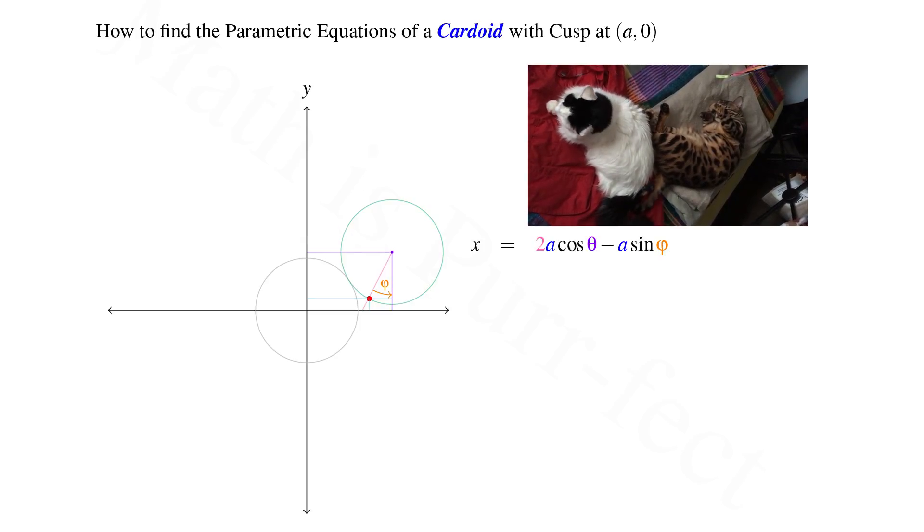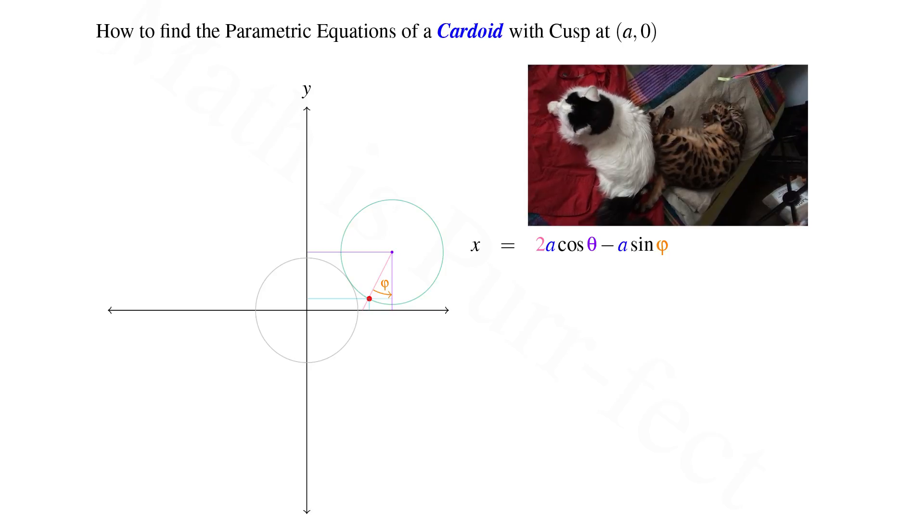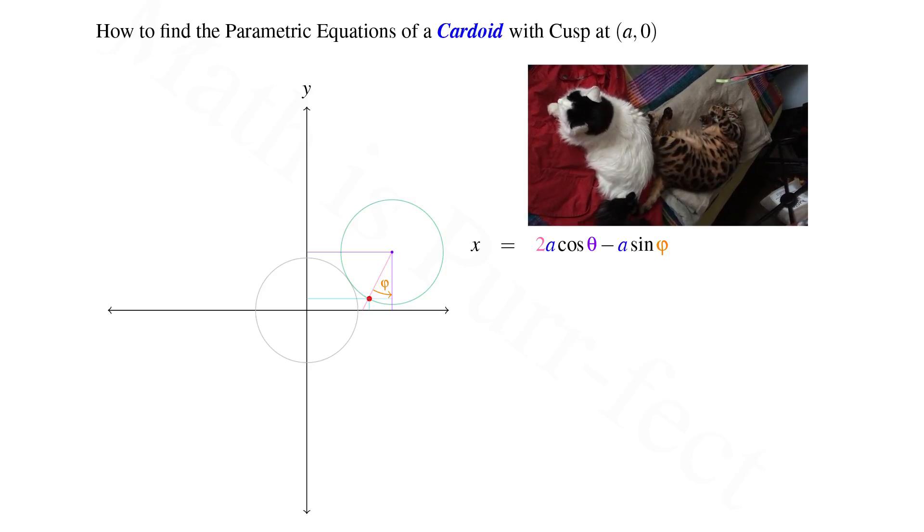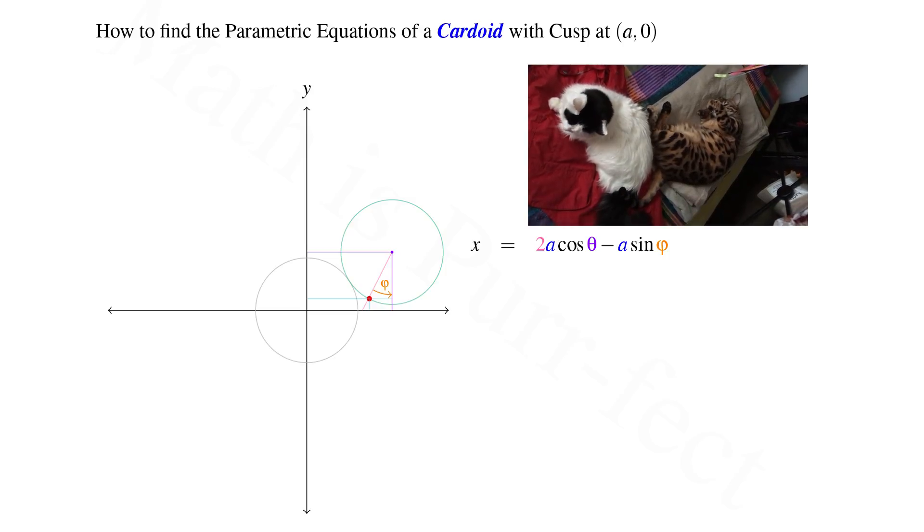Using triangle trigonometry, we note that the x coordinate of our point is a sin phi less than the x coordinate of the exterior circle's center at 2a cos theta.